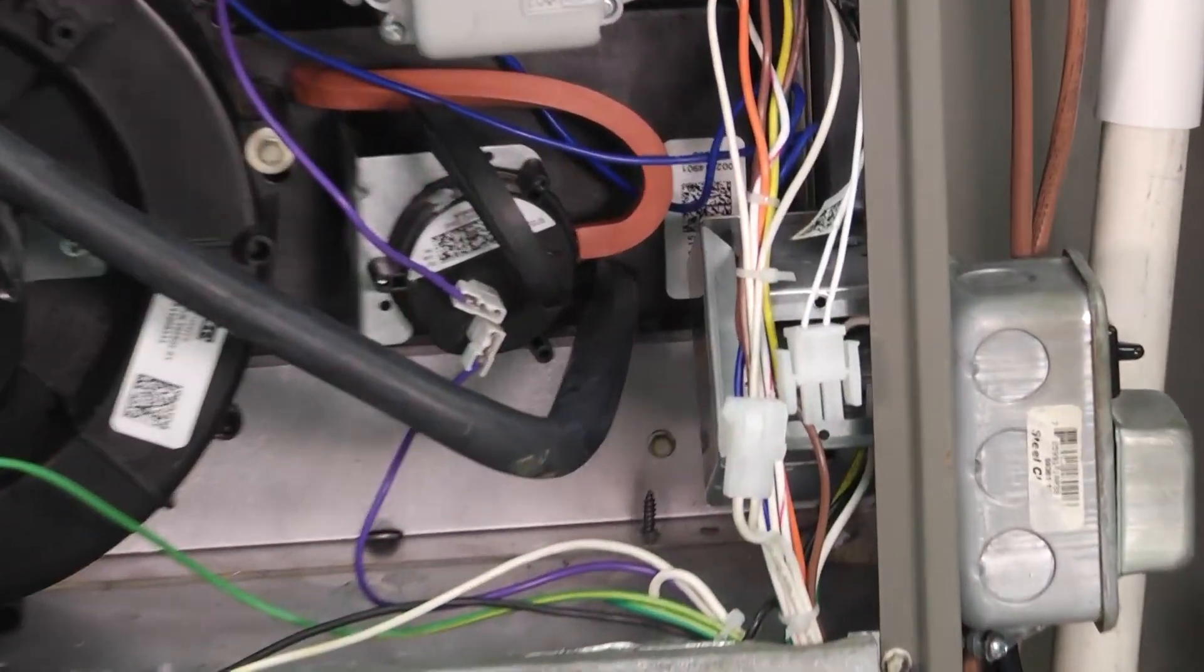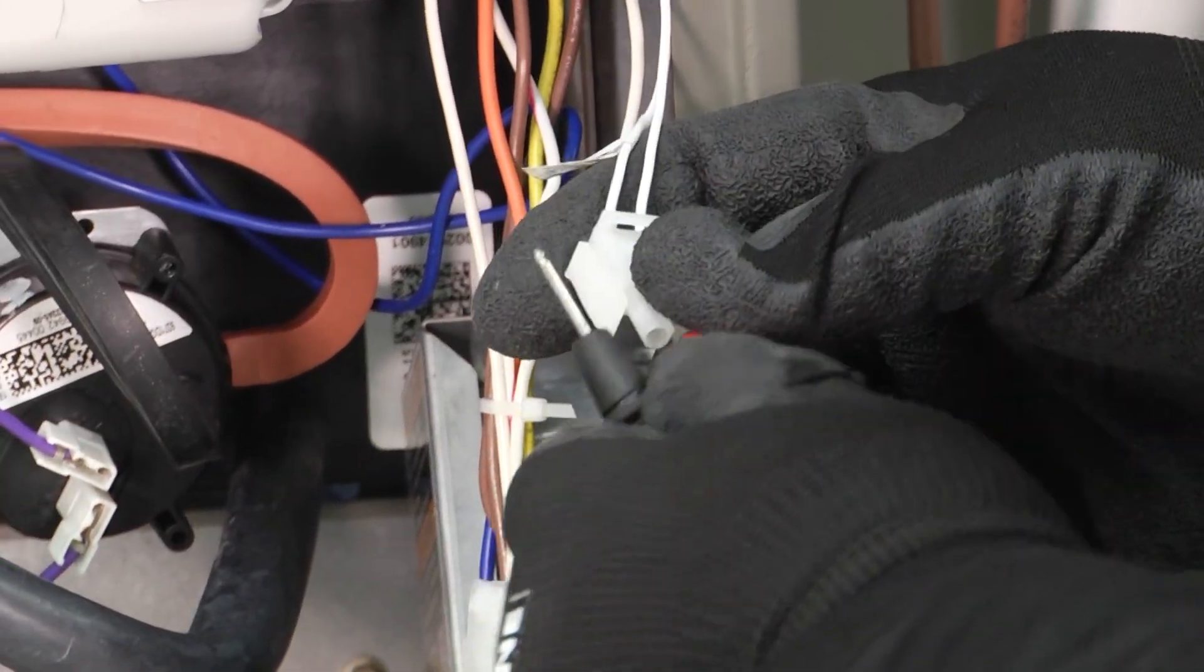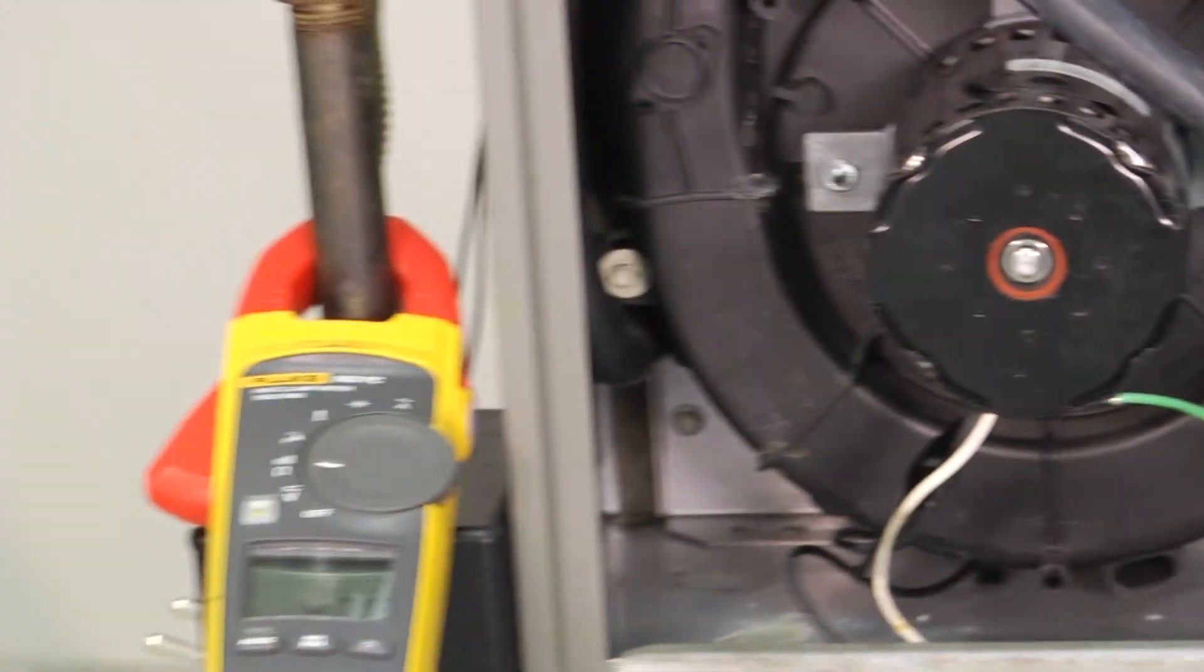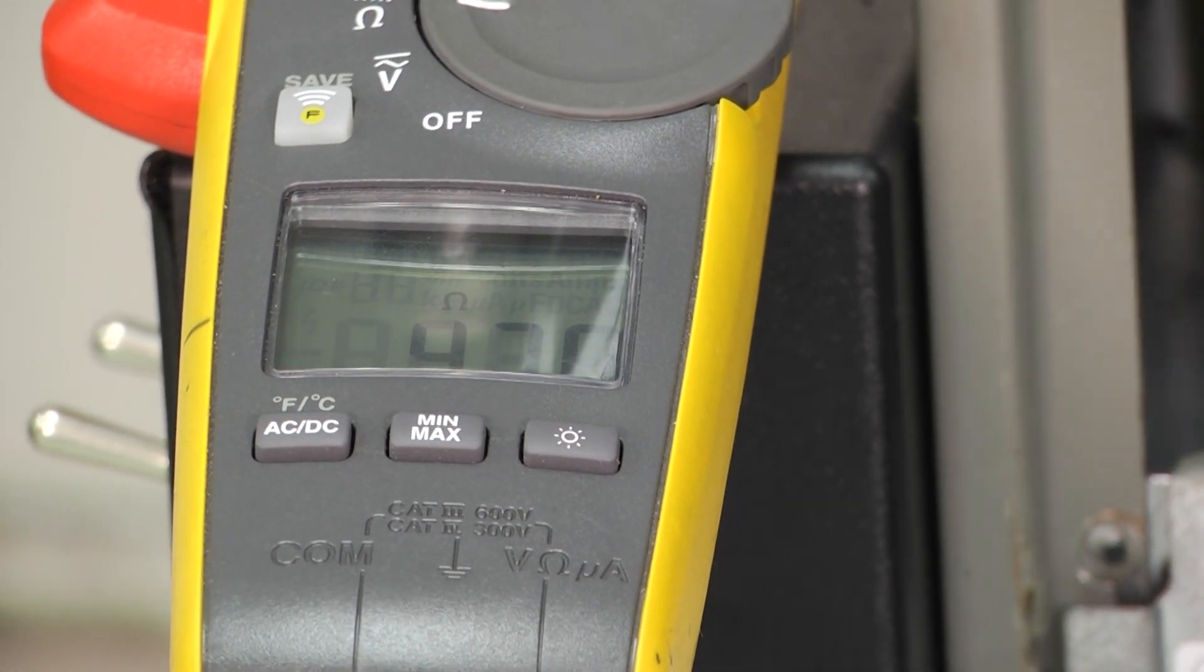Then all we simply do is we unplug our hot surface igniter here. I'm going to switch sides and we'll be able to go look at our meter over there. And I'm going to insert my leads into the holes there and then I'm going to get an ohm reading. And this one is reading at 47, 47 ohms.